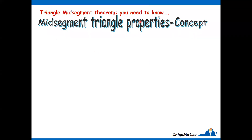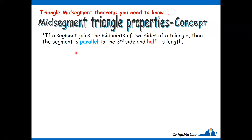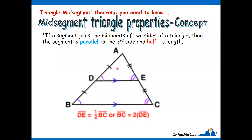The mid-segment triangle theorem states: if a segment joins the midpoints of two sides of a triangle, then the segment is parallel to the third side and half its length. This can be observed in the diagram — AB has its midpoint at D, AC has its midpoint at E. If you join DE, then DE is parallel to BC and DE is half of BC.